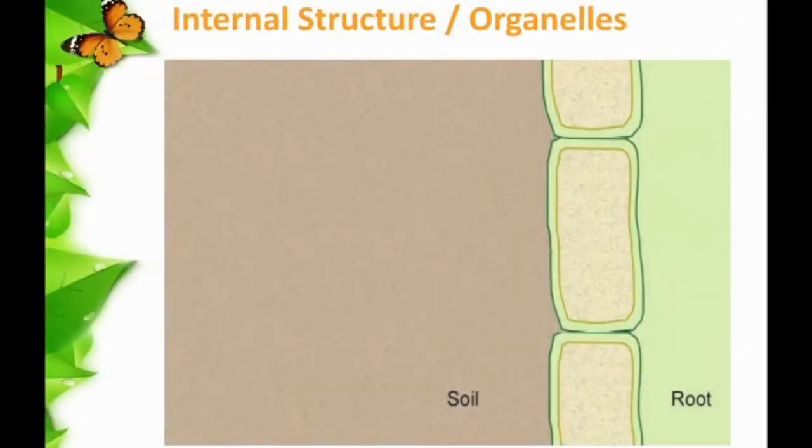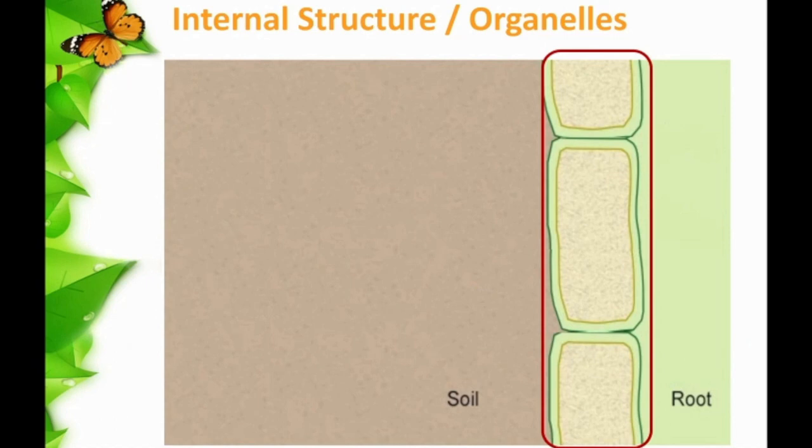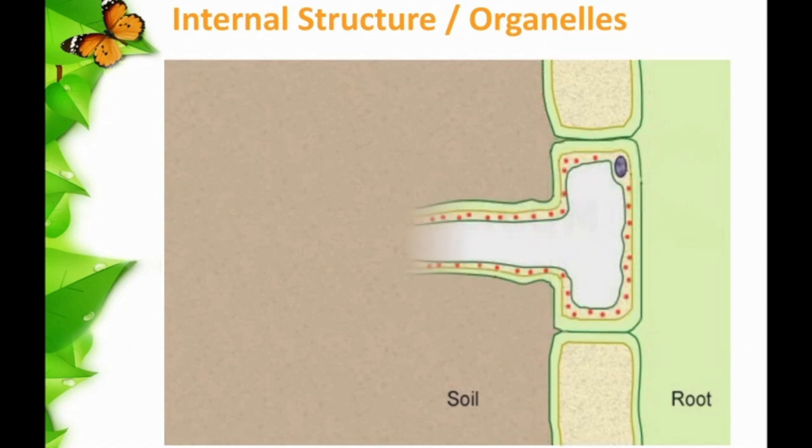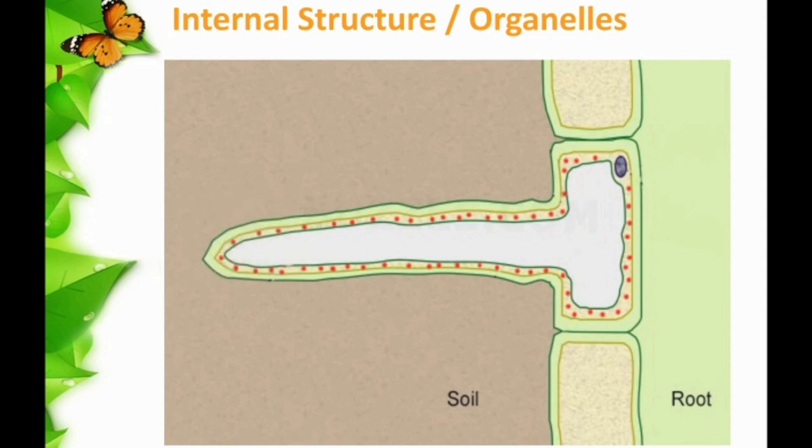Root hair cell is a specialized cell because of its distinct shape. Typically, plant cells are rectangular or cubic in shape, but the root hair cells have a thin lateral extension protruding its tail to the soil.